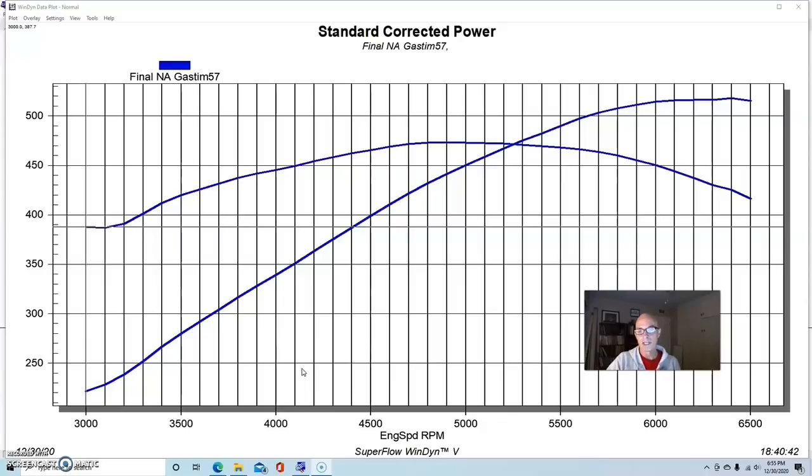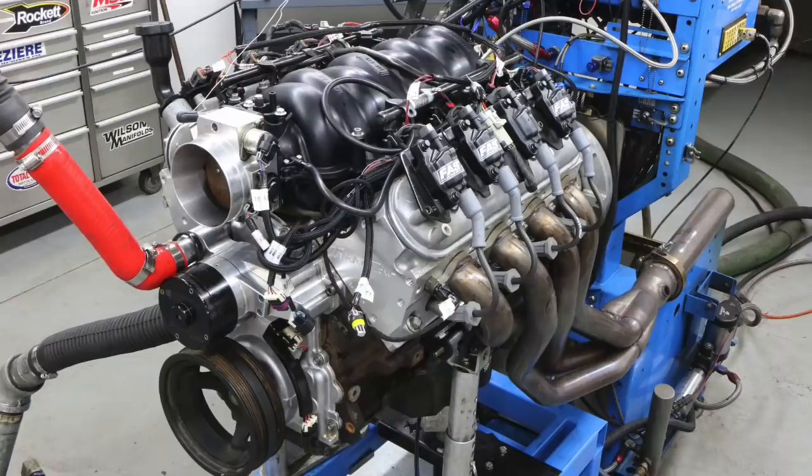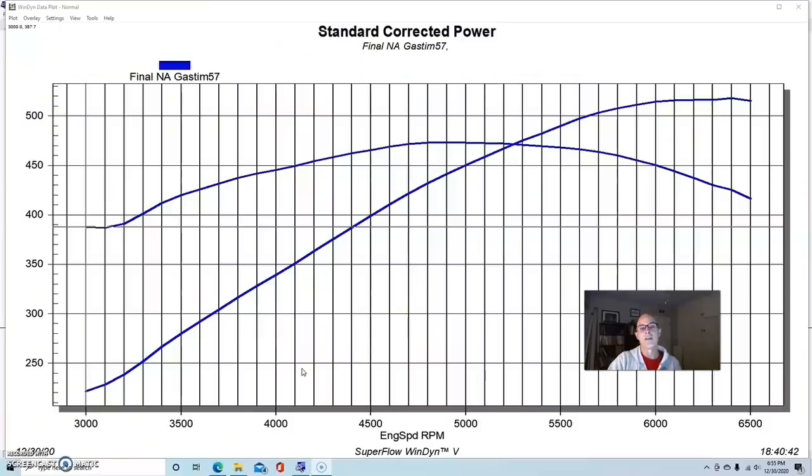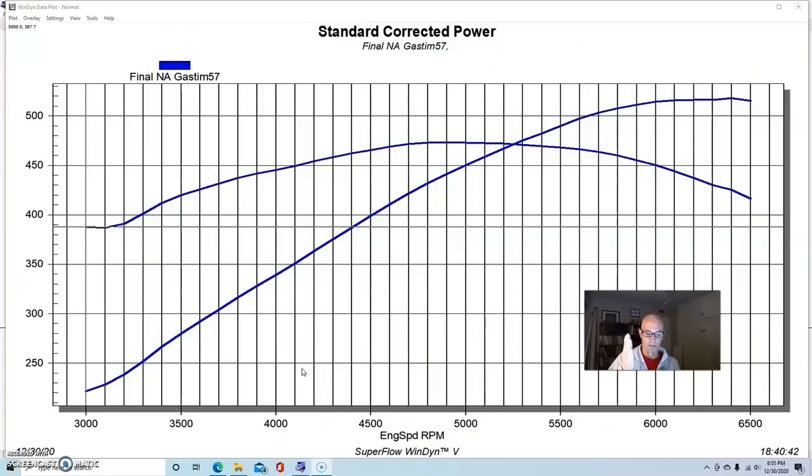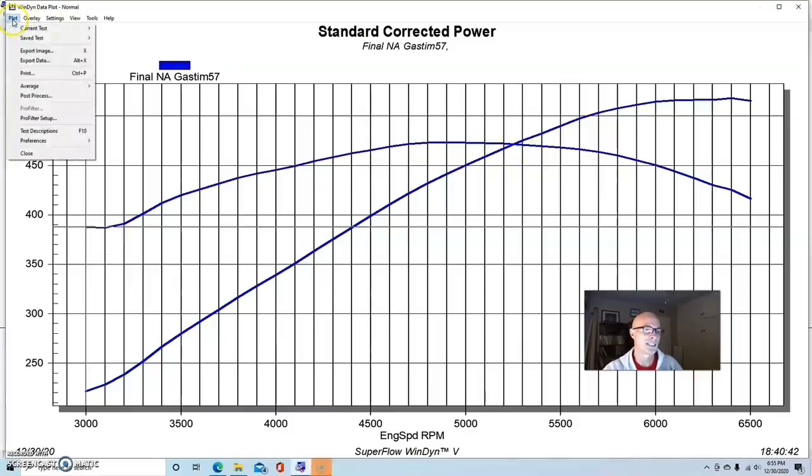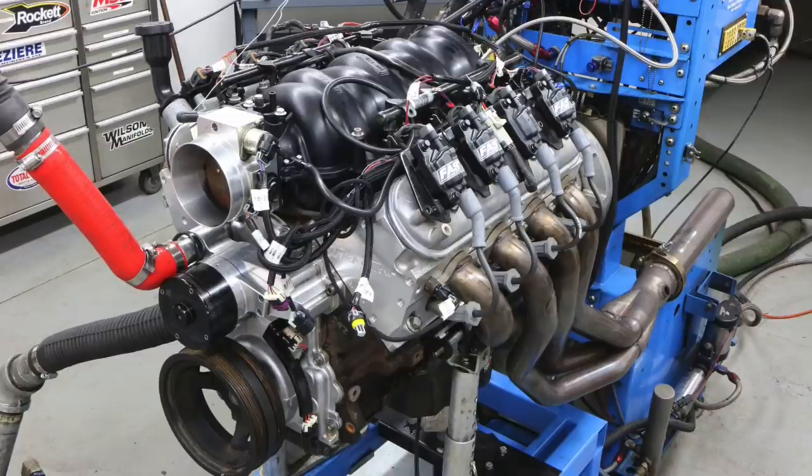People think that if you add E85 to anything you get big power gains. While I'll show you we did get big power gains on some applications, we did not get them on others. Maybe you guys can comment and let me know why you think that's the case. This is one instance right here - we ran the same motor NA and turbocharged.